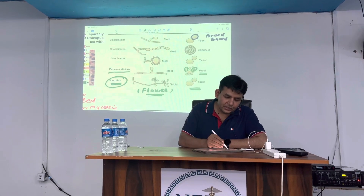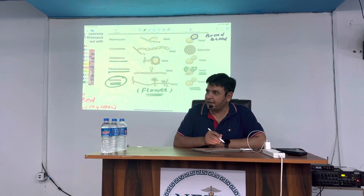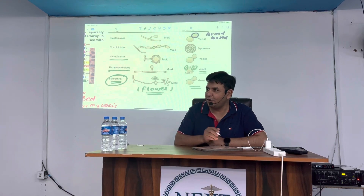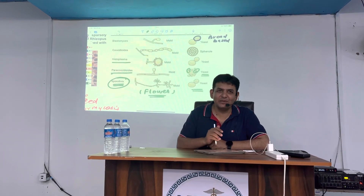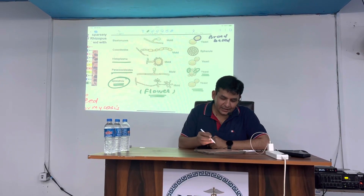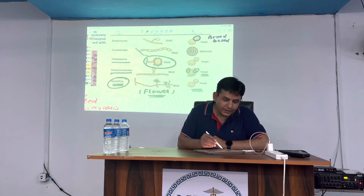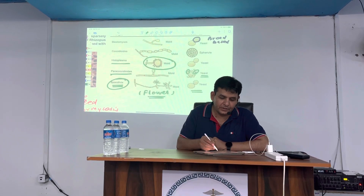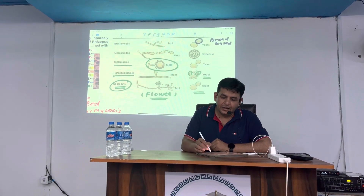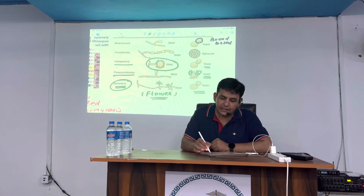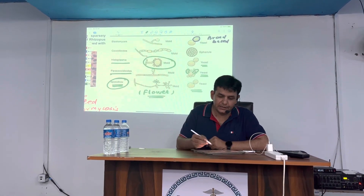Then comes histoplasmosis, which is caused by Histoplasma capsulatum. As you know, despite the name 'capsulatum,' it has no capsule. This organism produces macroconidia which looks like a sunflower, and the yeast form shows narrow-based budding.